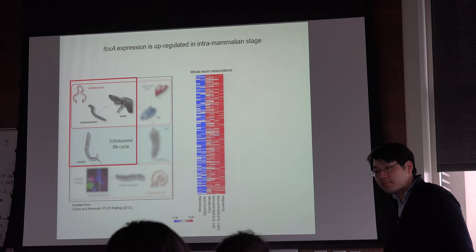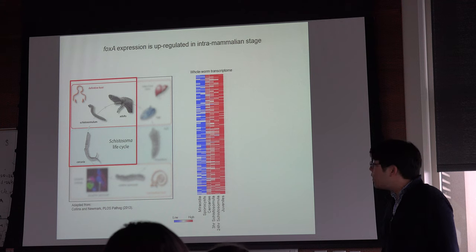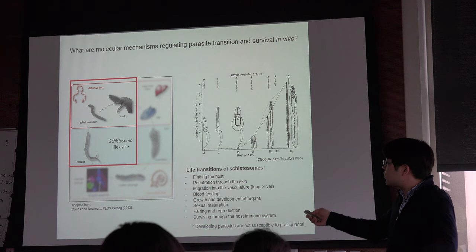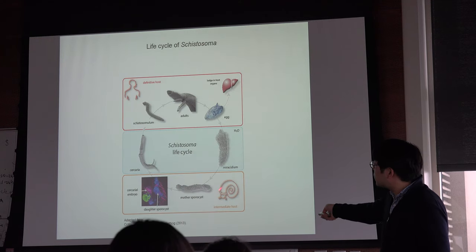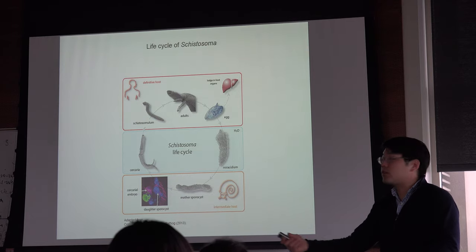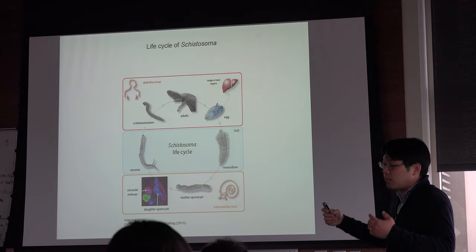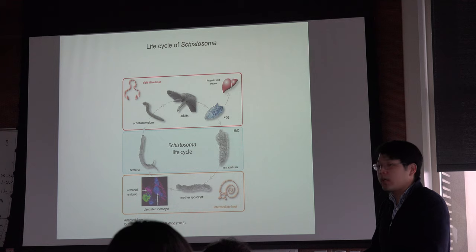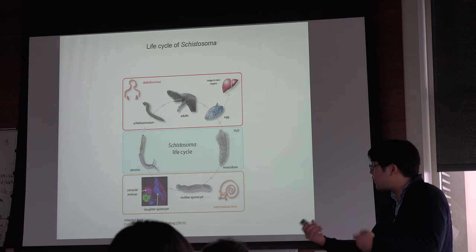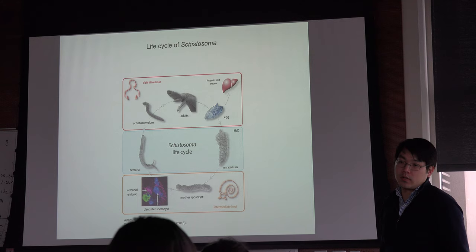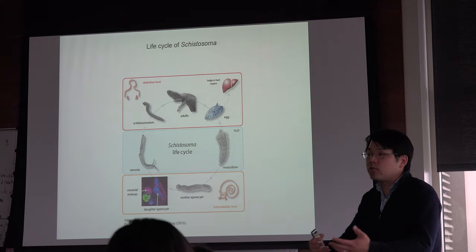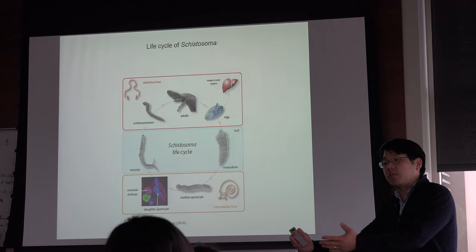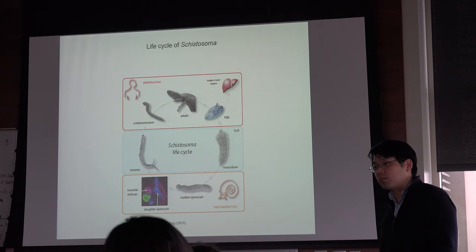An audience question: does the cercaria form reproduce in that form, and how is it able to find its partner? These snails can shed hundreds of cercariae, so if you have a mix of male and female sporocysts in the snail, they shed male and female cercariae. If both get into the same host, they find their way to each other. Especially in endemic areas, there are many infected snails with a mix of males and females, giving equal chance of infection by both.